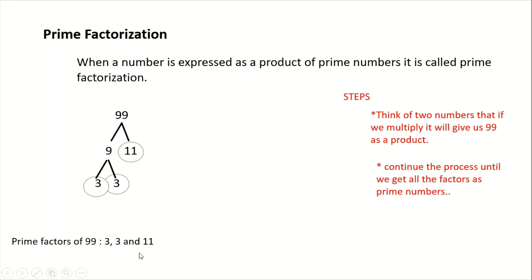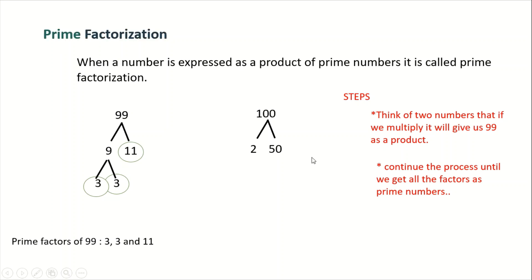Another example: we have 100. Just like what we did with 99, we first think of two numbers that when multiplied give us 100. We can use 2 times 50. We could also use 10 times 10 — that works too. Since 2 is already a prime number, we leave it. But 50 is still a composite number, so we need to factor it further.